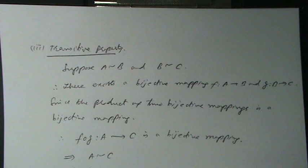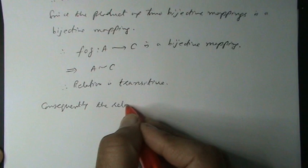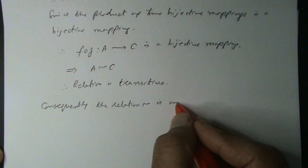Consequently, the relation tilde (~) is an equivalence relation among sets A, B, and C.